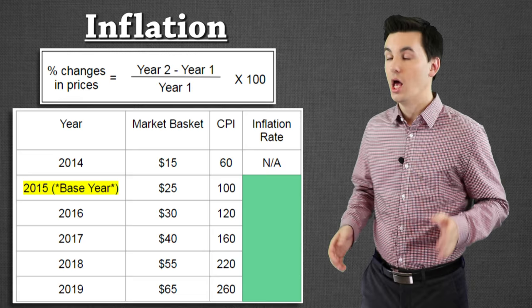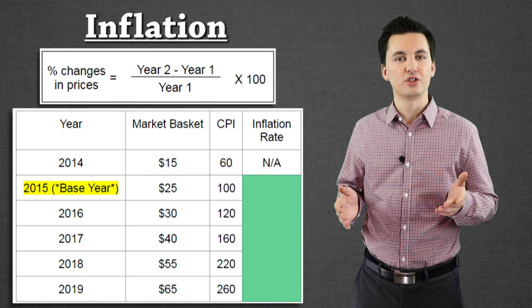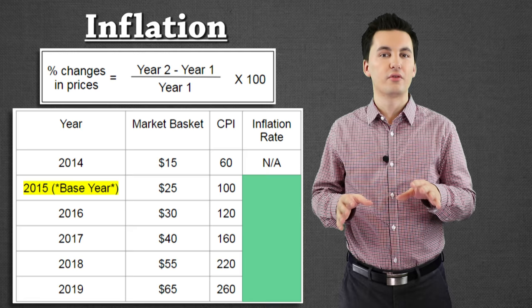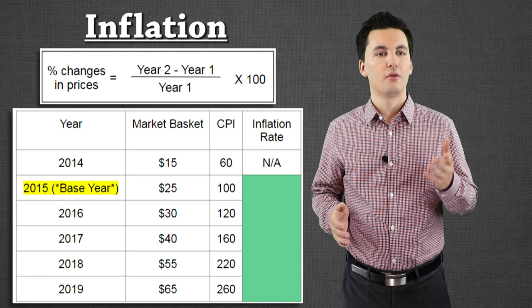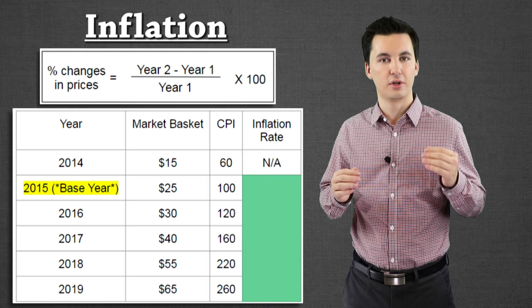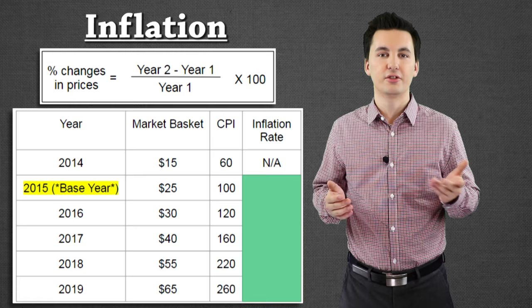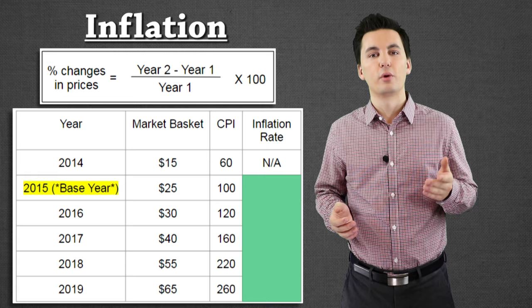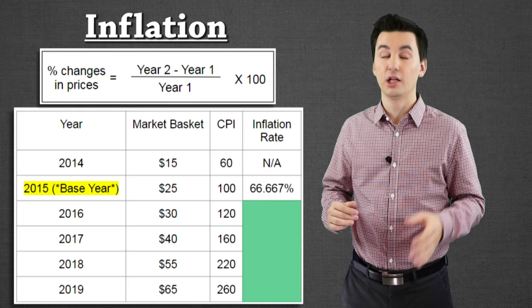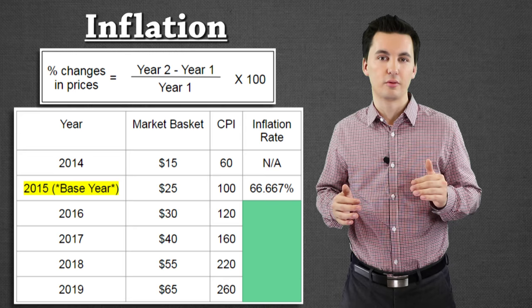One thing to note: if we want to find the inflation rate between years, we actually can't for 2014 because we don't have the data for 2013. Let's do one together. To calculate the inflation rate for 2015, we're looking from 2014 to 2015. We take our 100, which is year two, minus 60, which is the CPI for year one, then divide by 60, and times by 100. That gives us 66.67%, which is our inflation rate between these two years. Pause the video and try to figure out the rest of the table using the CPI values we calculated.